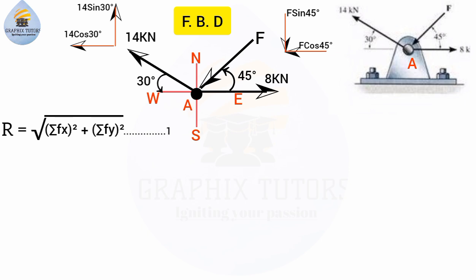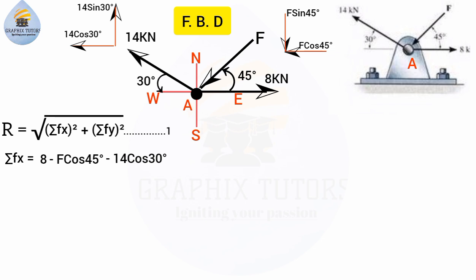For ΣFx, I focus only on forces acting horizontally. The 8 kilonewtons is acting to the right so it is positive. F cos 45 is acting to the left so it is minus F cos 45. The 14 cos 30 is also acting to the left, giving minus 14 cos 30. Now, 14 cos 30 equals 12.124, so minus 14 cos 30 equals minus 12.124. Adding this to 8 gives minus 4.124.